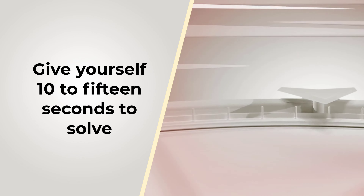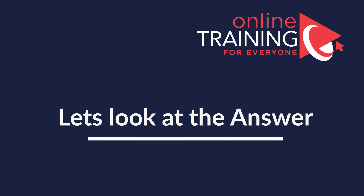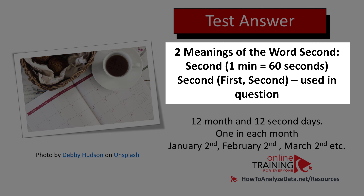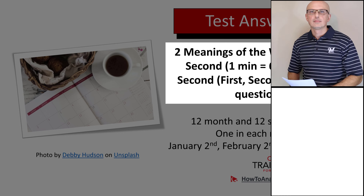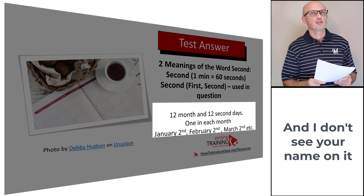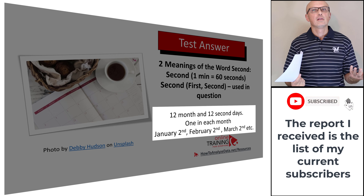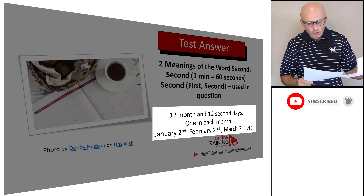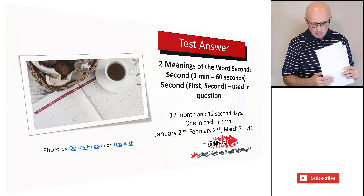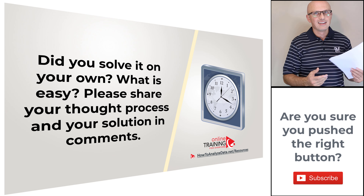This is a tricky question — it challenges your understanding of the word 'second.' There are two meanings: one is a unit of time (a minute has 60 seconds), and the other is a position in a sequence (first, second). The second meaning is used here. In a year there are 12 months, so there are 12 'second' days — January 2nd, February 2nd, March 2nd, and so on. Hopefully this gave you some laughs!